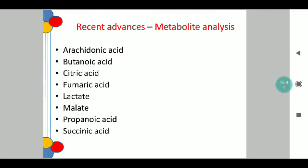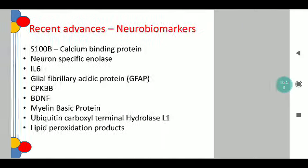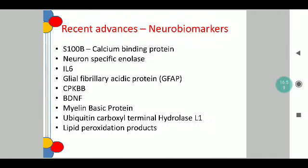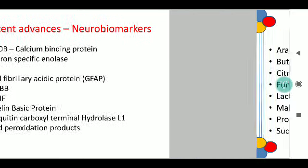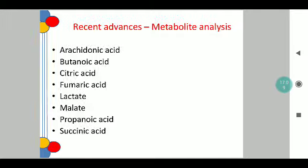With regard to metabolites, recent advances include arachidonic acid, citric acid, fumaric acid, lactate, malate, propanoic acid, and succinic acid. Apart from hypothermia cooling therapy, there are other therapies under development, and studies are also happening in neurobiomarkers and metabolites to ensure good outcome prediction and to quantify and judge prognosis.